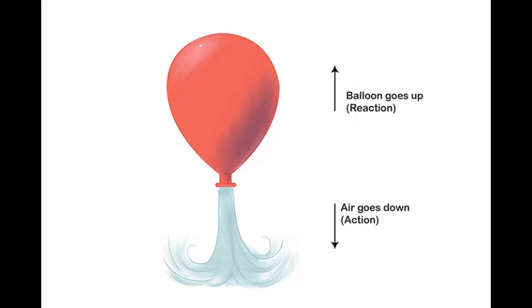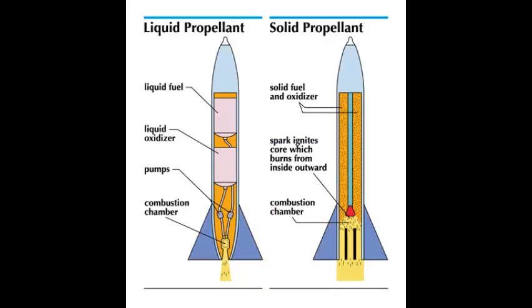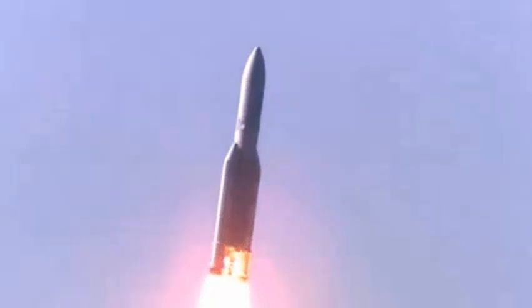This law also tells us how to build a powerful rocket. Rockets need to shoot out a lot of high-speed material such as solid propellant and liquid propellant. Propellant is a substance, usually a mixture of fuel and oxygen called oxidizer, which produces a large volume of very hot gases. These gases come out of the burning rocket fuel and push the rocket up and away from the Earth into space where there is no air.